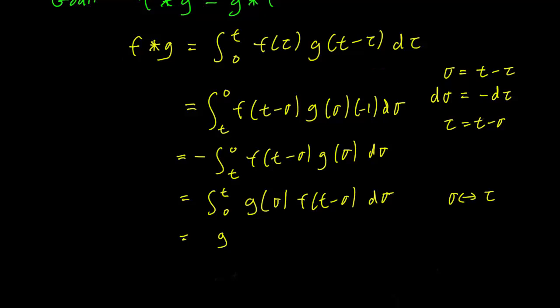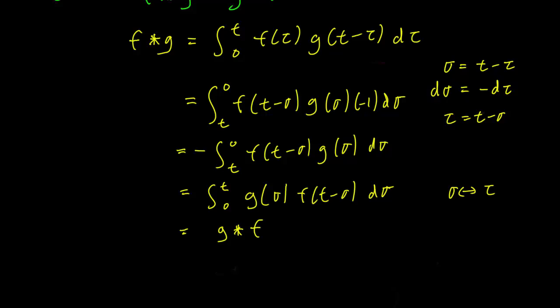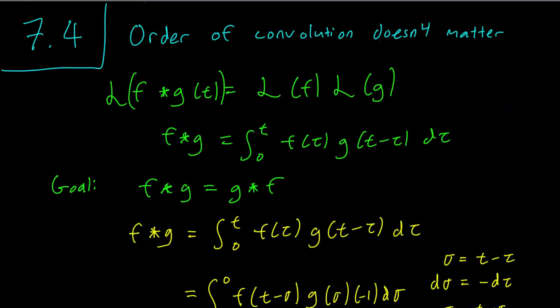So this is just, in fact, g convolved with f. And there you have it. The order of convolution doesn't matter, and convolution is indeed a product that behaves in the way that we expect it to. So f convolved with g is equal to g convolved with f.